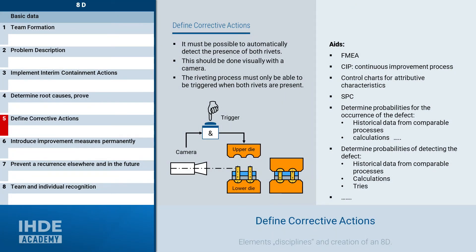After the cause of the failure has been clearly identified, it must be ensured that such a failure does not repeat itself — improvement measures must therefore be defined. Suitable tools for identifying and evaluating improvement measures include, for example, the FMEA, the continuous improvement process, control charts for attributive characteristics, statistical process control, historical data from comparable processes, or calculations regarding the probability of occurrence of the failure — and the same applies to detecting the defect.